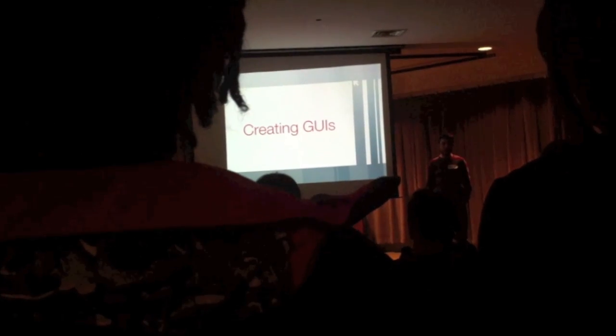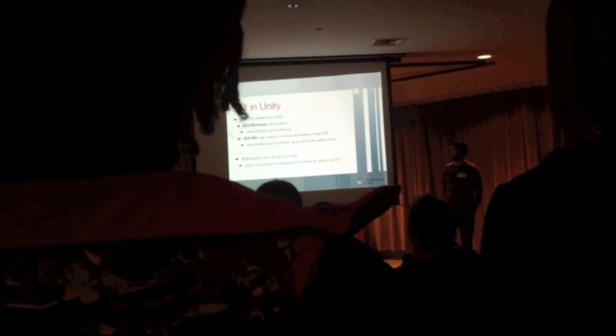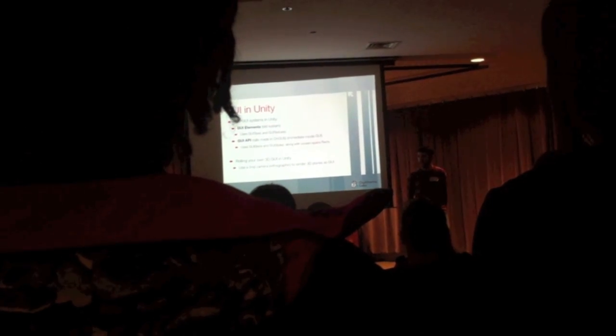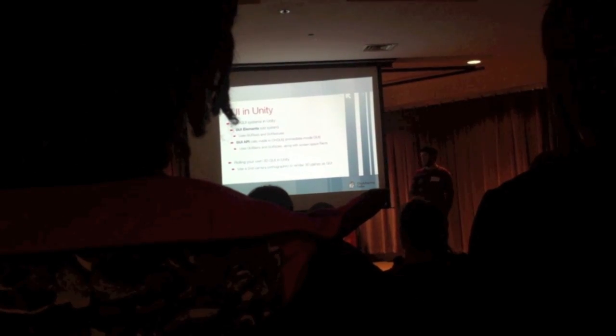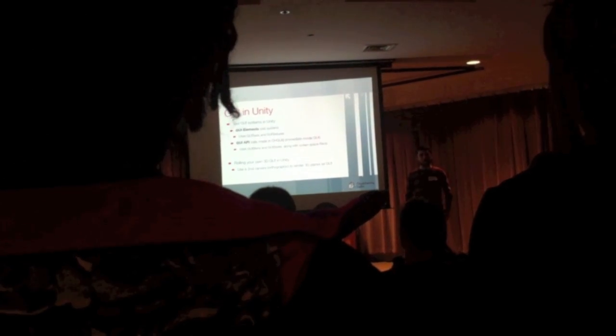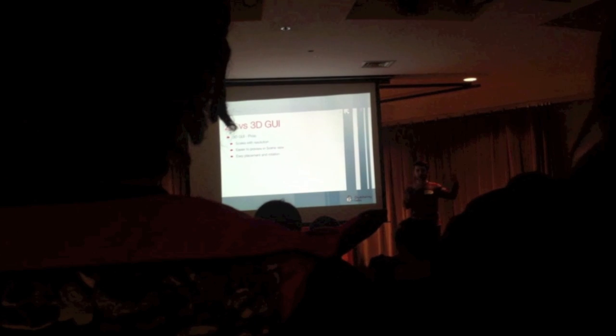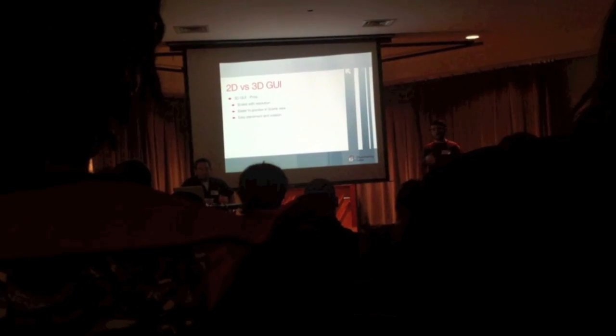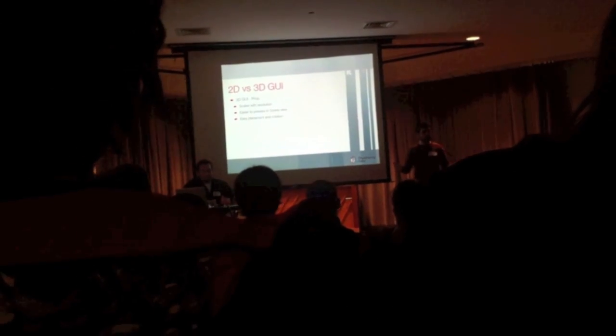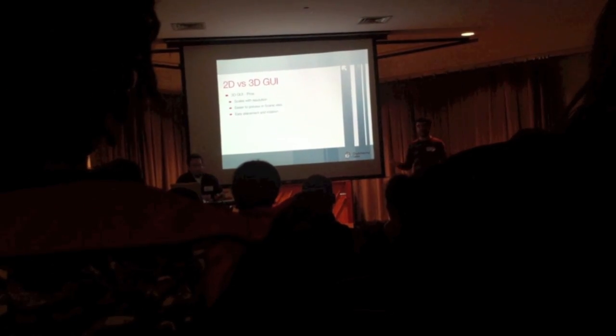Let's talk about creating your UI. Unity comes with two systems: the older system based on GUI elements using GUI text and GUI textures, and the relatively newer system using the GUI API in the OnGUI method of your scripts, which relies on GUI skins and GUI styles. For Smothertruck, we rolled out our own 3D GUI using a second orthographic camera. Smothertruck is a multi-platform title coming out on iPhone, iOS, iPad, Mac, and PC — many different resolutions and aspect ratios — and a 3D GUI scales very nicely with resolutions.